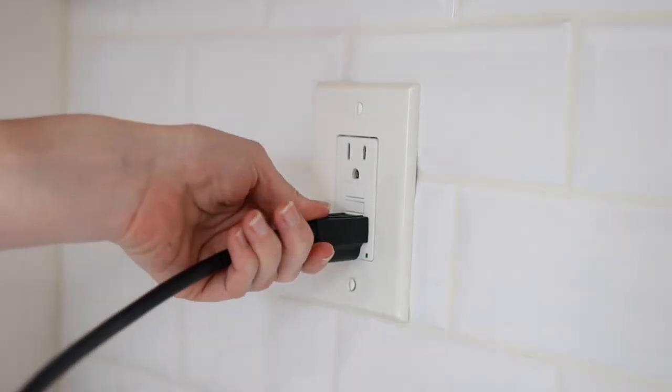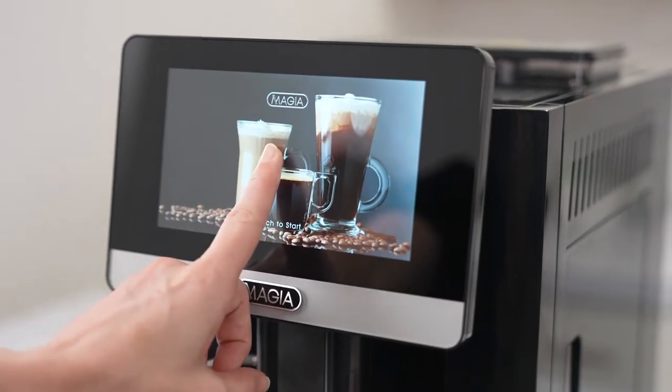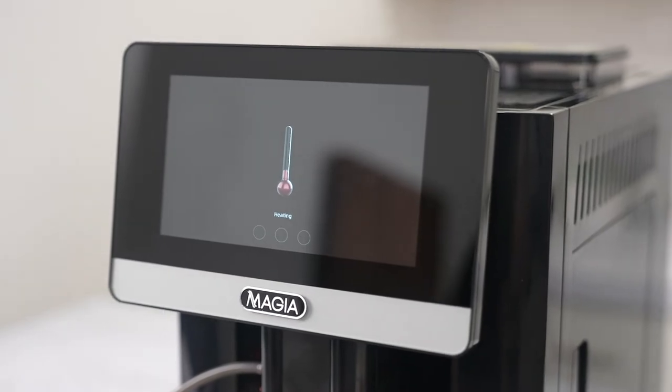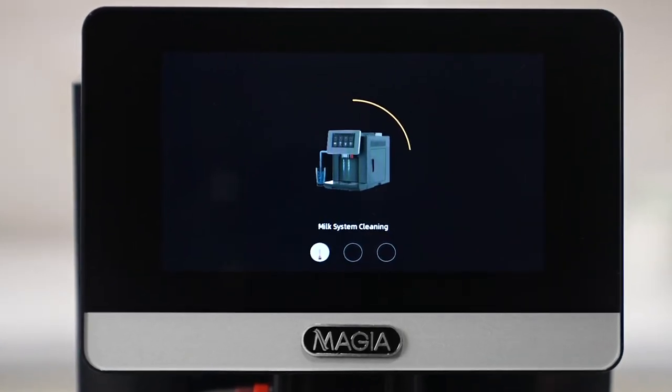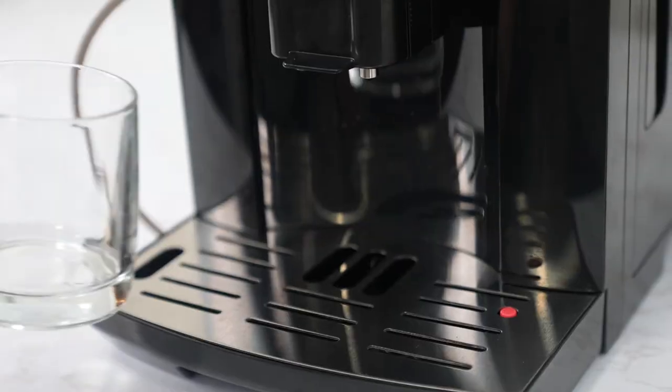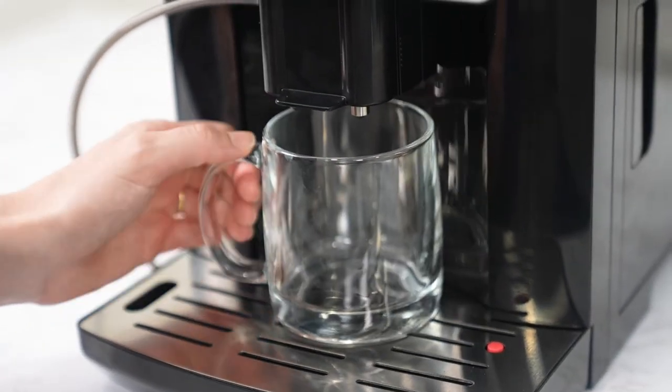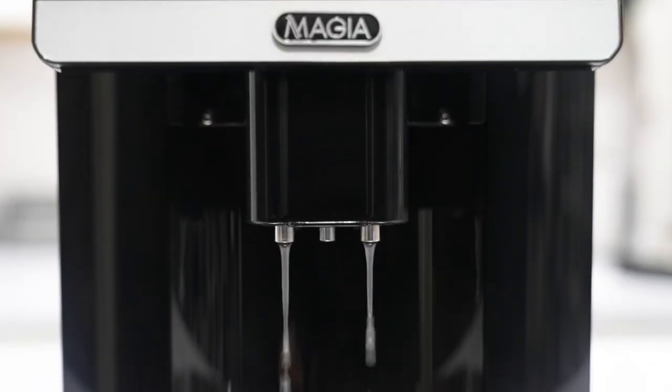Plug your Mahia in. Tap the display screen with your finger. The machine will start up and perform a self-clean. Self-cleaning uses about a quarter cup of water. You can place a cup on the tray to catch this water or allow it to fall into the tray.